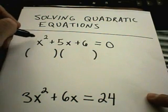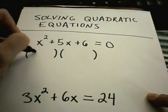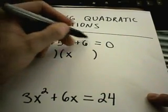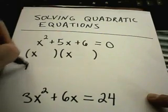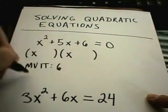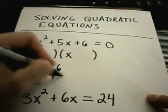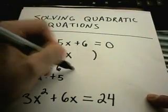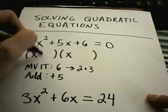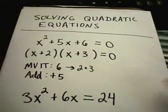So recall to factor a quadratic, when the coefficient is a 1 on an x squared we can use the following trick. To get an x squared I'll need an x and an x. And then I think about numbers that multiply to 6, but I need numbers that add up to the middle term, in this case positive 5. Well, two numbers that multiply to positive 6 are positive 2 and positive 3. So this is how the quadratic equation will factor.